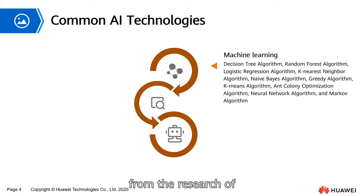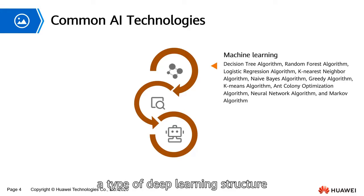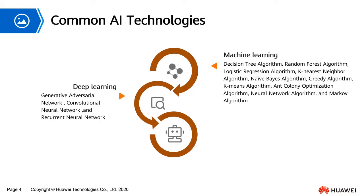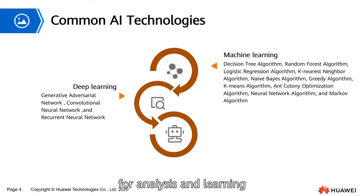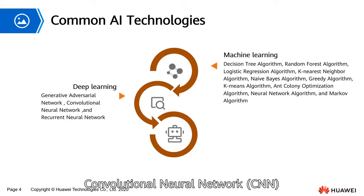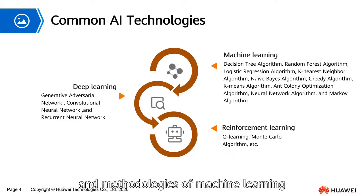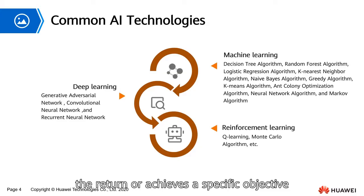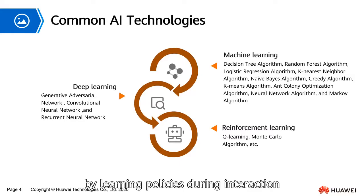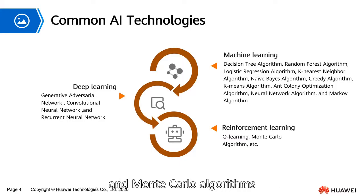Deep learning is derived from the research of artificial neural networks, and multilayer perceptron is a type of deep learning structure. It is a new field in machine learning research, with the motivation to establish neural networks that simulate the human brain, including generative adversarial network (GAN), convolutional neural network (CNN), and recurrent neural network (RNN). Reinforcement learning describes and solves problems where an intelligent entity maximizes return by learning policies during interaction with the environment. Main algorithms include Q-learning and Monte Carlo algorithms.